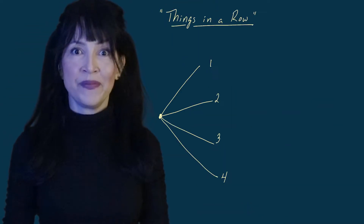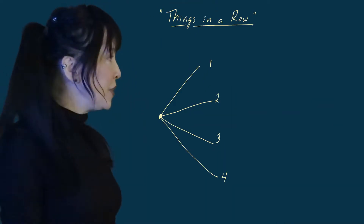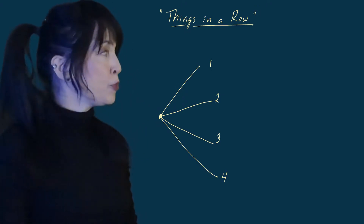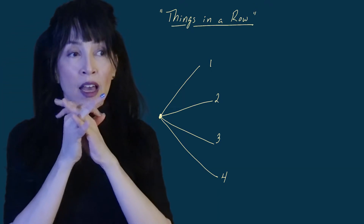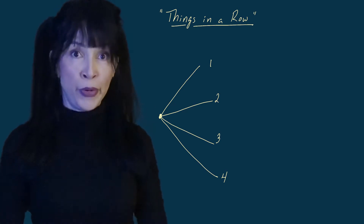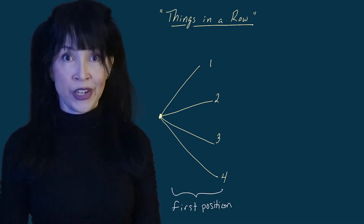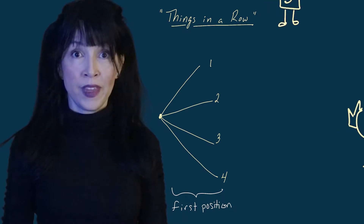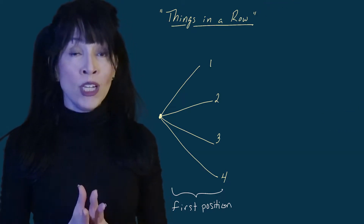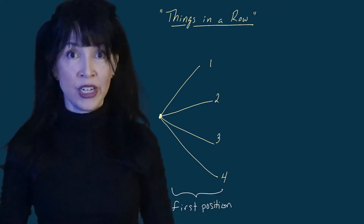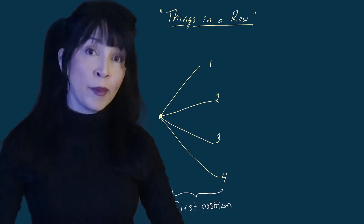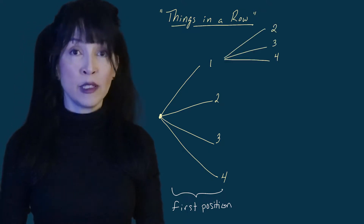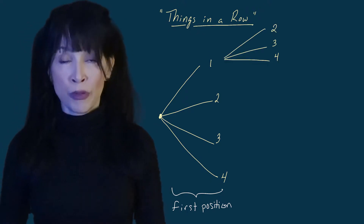Let's look at a tree diagram. I'm going to start at some root and then branch out, and at the end of each branch I'm going to put the number of the person going in the first position — so person one, two, three, or four. Once person one goes in the first position, I can think about the second position and there are only three possibilities: person two, three, or four.